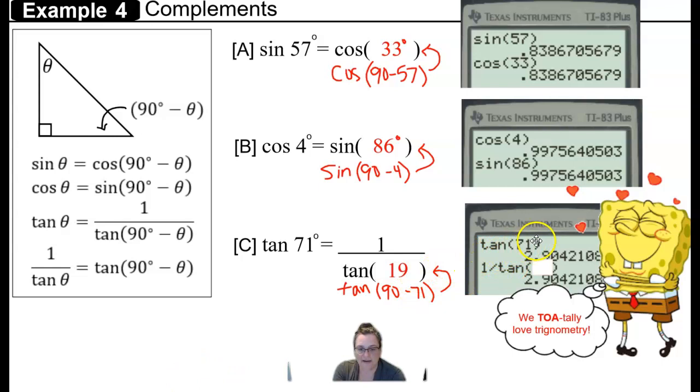When we check that in the calculator, 1 over the tangent of 19 is equivalent to the tangent of 71. So that's our property, or identity, for tangent.